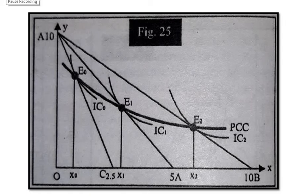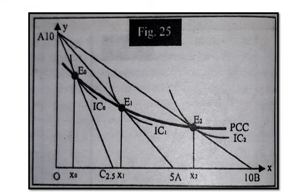Purchasing OX0 of X, by joining the point E0, E1 and E2, we get price consumption curve PCC. The locus of all successive equilibrium points is known as PCC, price consumption curve.